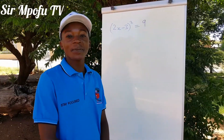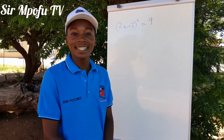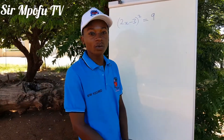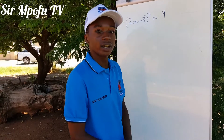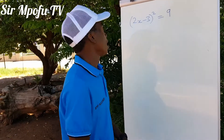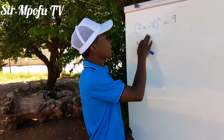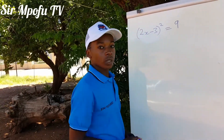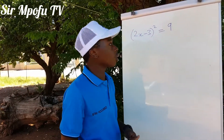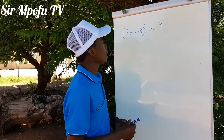Hi guys, welcome to Sample of Maths Daily Revisions. Today we are going to revise this first examination equation: 2x minus 3 squared is equals to 9. So I'm going to show you how to solve this one.